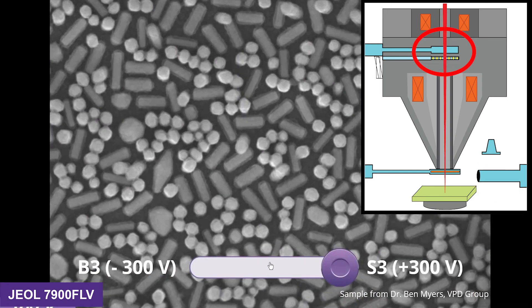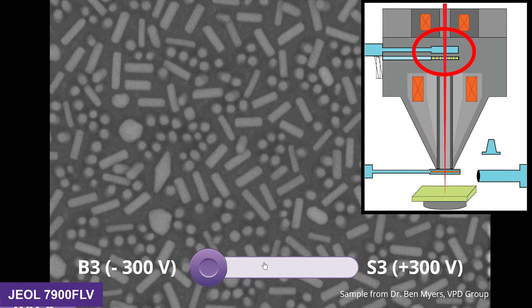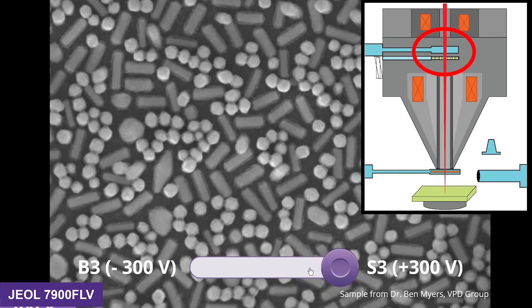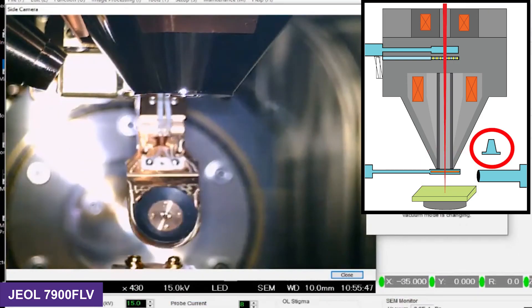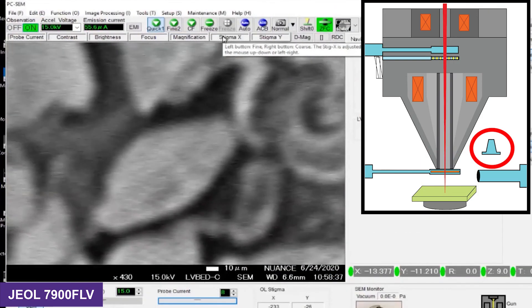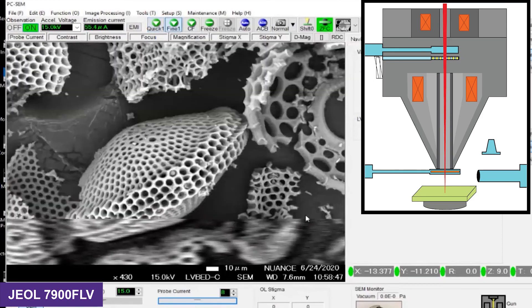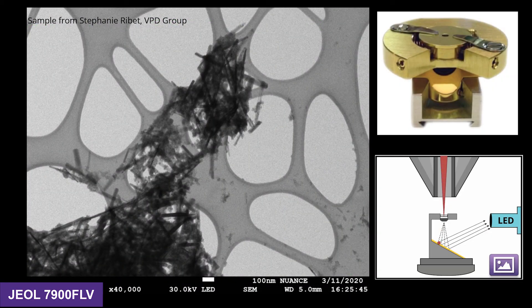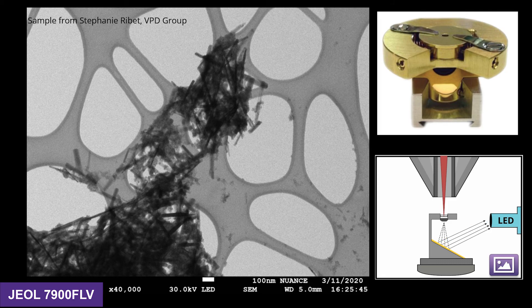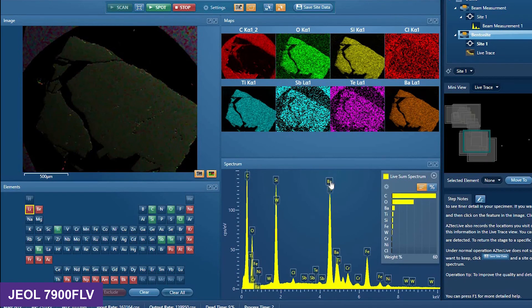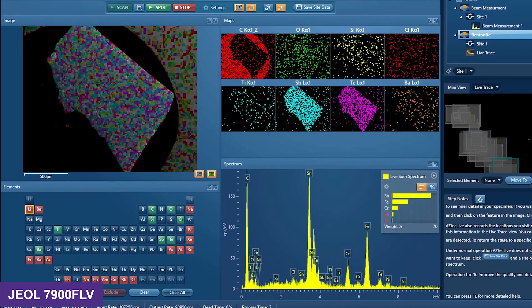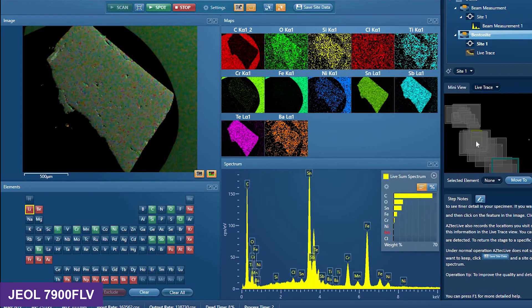It also has an in-lens or upper detector with an energy grid filter which allows you to filter out SE and backscattered electrons. It has a dedicated backscattered electron detector and a low-vacuum backscatter detector for low-vacuum operations. This microscope also has gentle beam mode for beam decelerations up to 2 kV and a STEM holder for bright-field STEM imaging using the lower detector. The 7900 has an EDS detector with Oxford's Aztec Live, which allows live elemental mapping as you move around your sample.